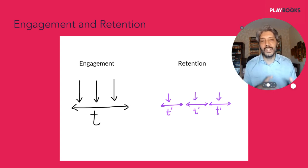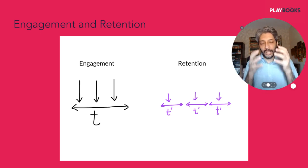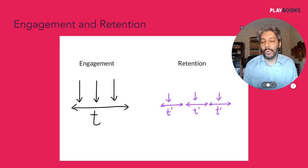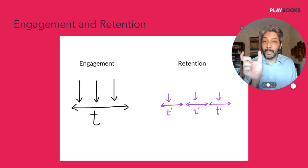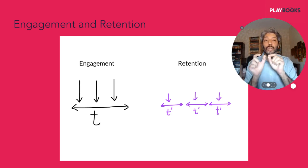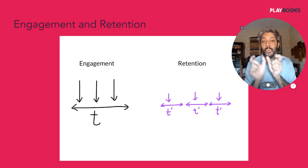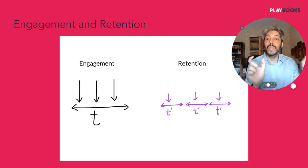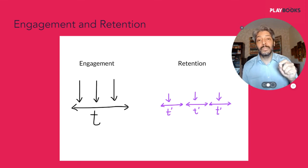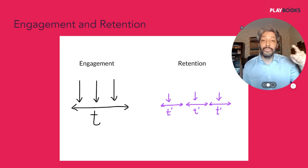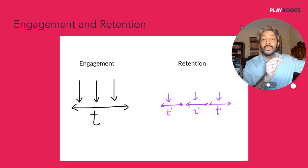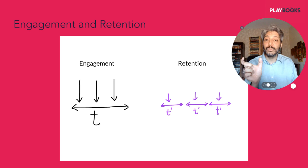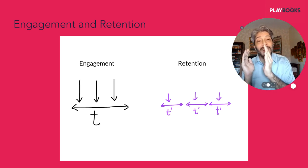A lot of people confuse engagement and retention — they sound almost similar, but when it comes to metrics, these are two very distinct terms. They are correlated, but there is no causation between the two. Engagement is measured in one period of time: how often an activity is repeated in a given period. Whereas retention talks about the same length of time period — day over day, week over week. You showed up in week zero — did you show up in week one and week two? Retention measures how frequently you come back over a series of equal time steps, whereas engagement measures how frequently you came to the product in a given period of time.